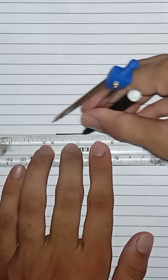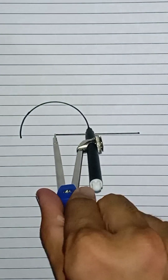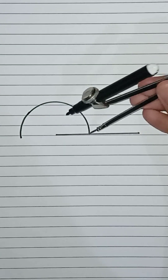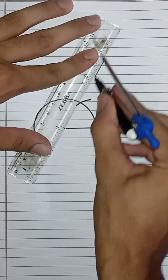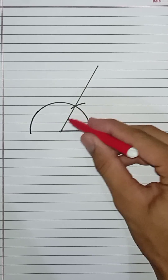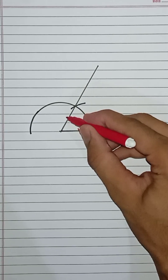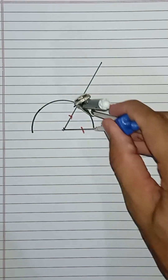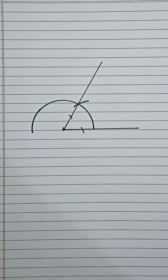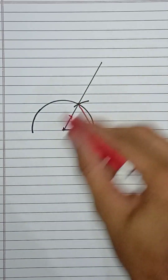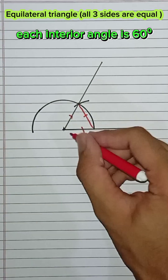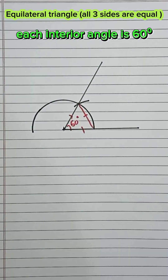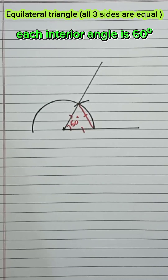Draw a line segment here. Now draw a semicircular arc. With the same length as the radius of the semicircle, draw an arc here, then draw a line. These two lines are equal to each other as they are the radius of the same semicircle. This arc length is equal to the radius of the semicircle, so the line here will be equal to these two lines. So this is an equilateral triangle, and we know each interior angle of an equilateral triangle is 60 degrees. I had proven this in my short video — I will provide its link in the comment below.